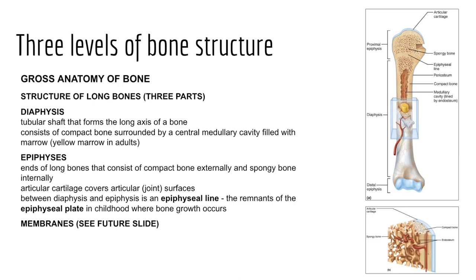The metaphysis is the region where the diaphysis joins the epiphysis. In growing bones, each metaphysis holds an epiphyseal plate — a layer of hyaline cartilage that, from birth through adolescence, allows the diaphysis to grow in length. Often called a growth plate, when a child reaches adolescence and stops growing, the epiphyseal plate closes and becomes the epiphyseal line.